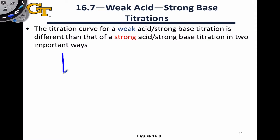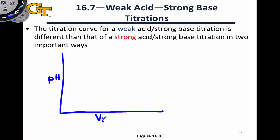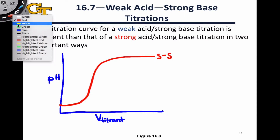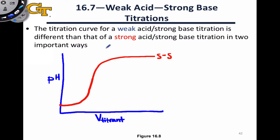In the last video we looked at the titration of a strong acid with a strong base. On the titration curve we were plotting pH versus volume of titrant. Because we were titrating an acid — the analyte — we started at a very low pH, the pH increased rapidly, we hit the equivalence point, and then the curve leveled off. In this video we're going to look at titrating a weak acid, which differs from a strong/strong titration in two important respects.